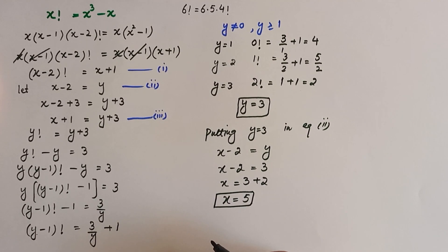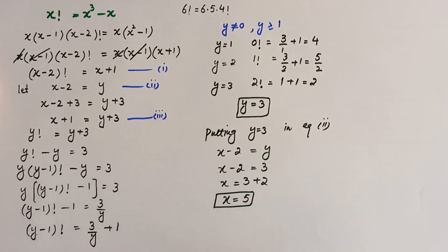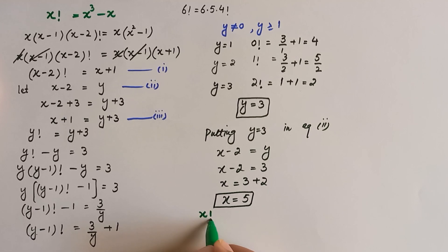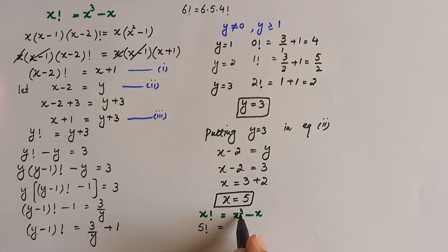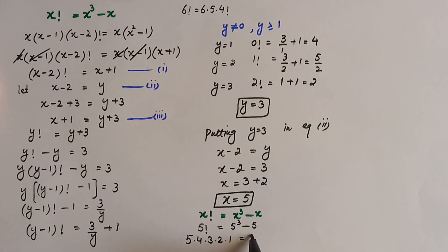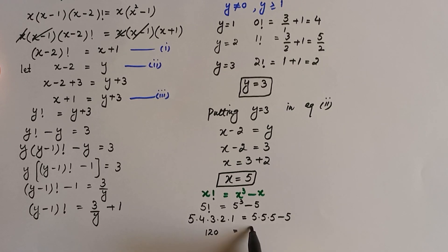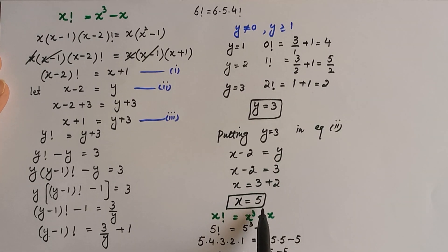Let's verify by putting x equals 5 into the original equation x factorial equals x cubed minus x. We get 5 factorial equals 5 times 4 times 3 times 2 times 1, which is 120. And 5 cubed minus 5 equals 125 minus 5, which is also 120. Since both sides are equal, x equals 5 is confirmed correct.